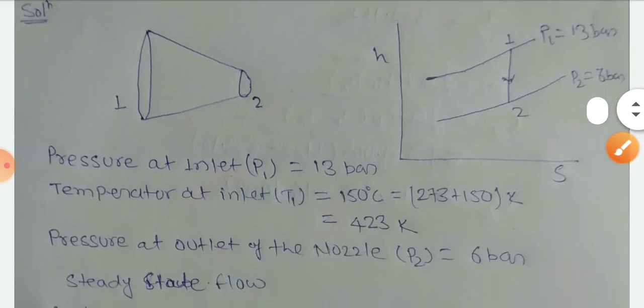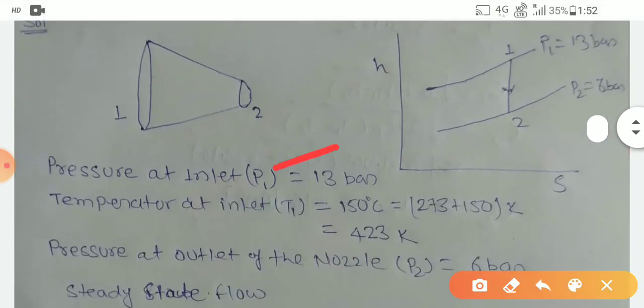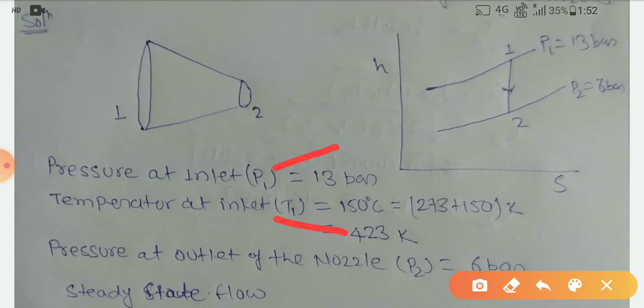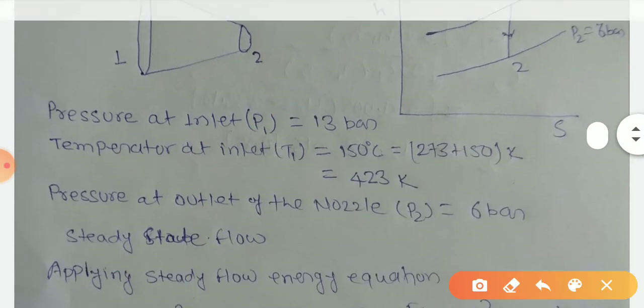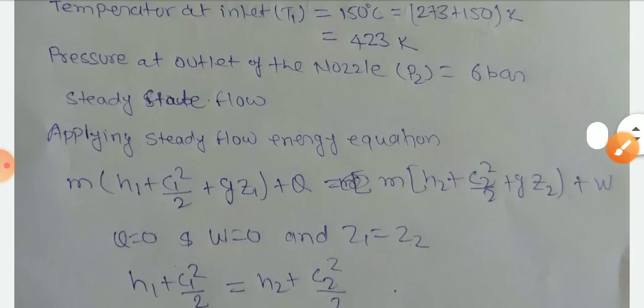So here first I will write: P1 is 13 bar, temperature T1 is 423 Kelvin, and pressure P2 is 6 bar. So here I am applying steady flow energy equation.